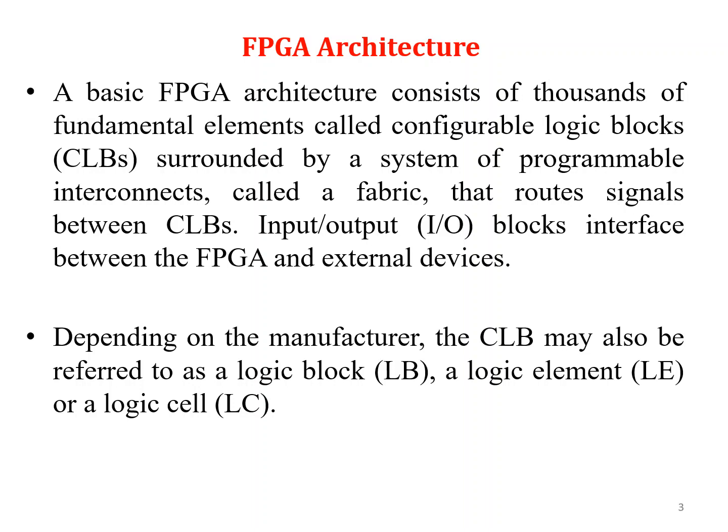FPGA consists of CLB — Configurable Logic Blocks. Thousands of CLBs are surrounded by a programmable interconnect called the fabric, which routes signals between CLBs. Apart from CLBs and interconnects, IO blocks are there. The IO block interfaces between the FPGA and the external devices. Depending on the manufacturer, CLB can be termed as logic block, logic element, logic cell, or logic module.